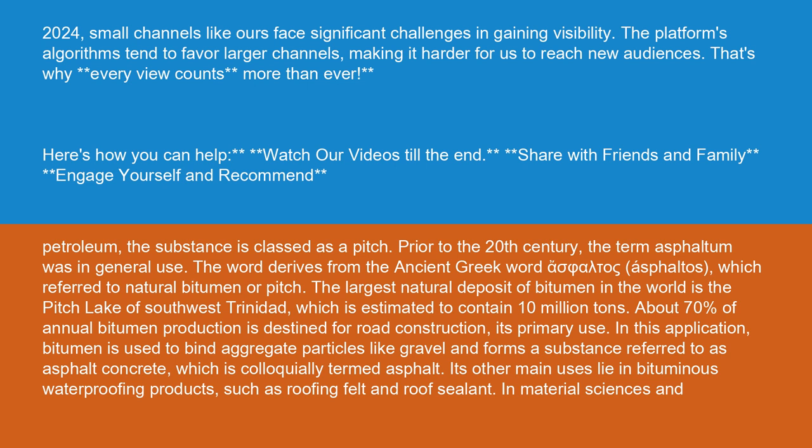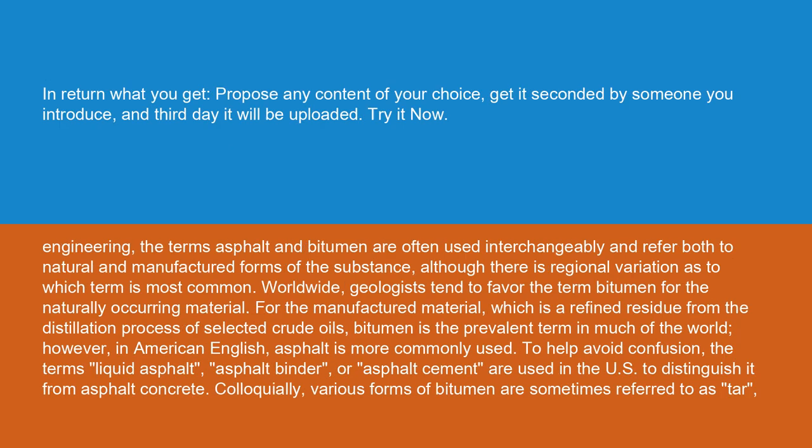In this application, bitumen is used to bind aggregate particles like gravel and forms a substance referred to as asphalt concrete, which is colloquially termed asphalt. Its other main uses lie in bituminous waterproofing products, such as roofing felt and roof sealant. In material sciences and engineering, the terms asphalt and bitumen are often used interchangeably and refer both to natural and manufactured forms of the substance.